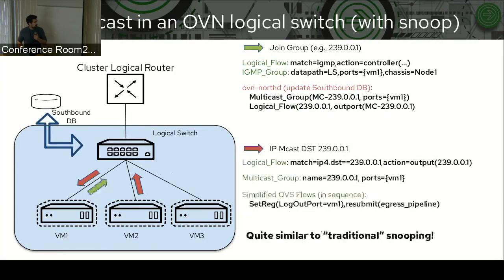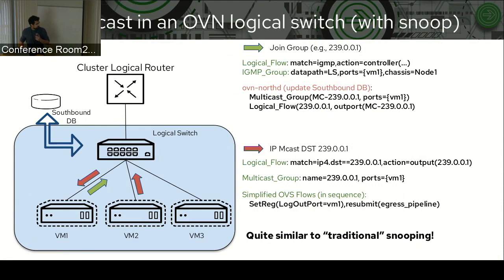If we enable IGMP snooping in OVN, what happens when VM1 sends a report saying it's interested in multicast traffic for a specific group? The packet gets punted to OVN controller, which installs an entry in the IGMP groups table in the southbound database. OVN-NorthD monitors that table and creates more specific flows matching the multicast traffic, and a multicast group consisting of the ports where traffic should go. Then when traffic arrives from a different VM, instead of being flooded to all logical ports, it gets efficiently forwarded only to the port interested in the traffic — very similar to traditional snooping.